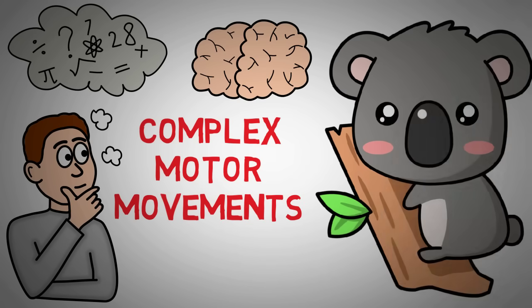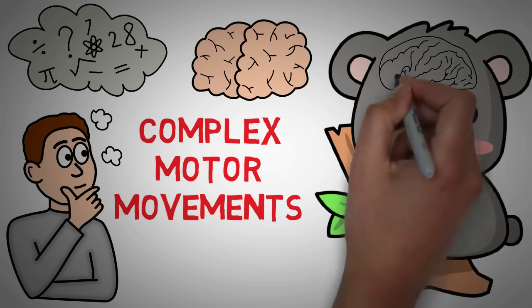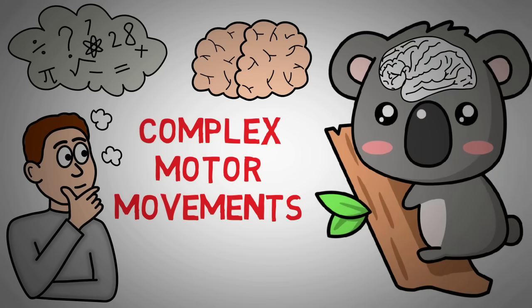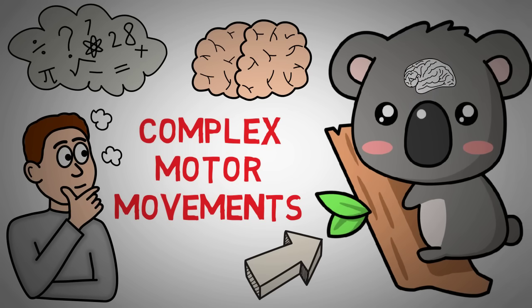For example, a koala used to have a much bigger brain than it does now. However, once it evolved its digestive system to survive on just eucalyptus leaves, it meant that less movement was required. Fewer complex movements also meant less brain was needed. So the koala's brain physically shrunk.